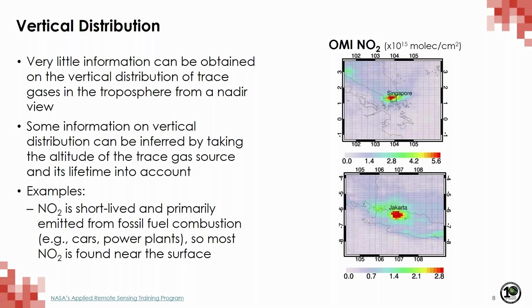Shorter-lived species like NO2 or SO2 are strongly enhanced in the planetary boundary layer, which is the layer closest to the Earth's surface, because of their strong surface sources and short atmospheric lifetimes. You can see very high gradients in NO2 in the plots on the right-hand side. Longer-lived species like ozone and carbon monoxide show weaker vertical variation, making isolation of the amount of these species in the planetary boundary layer very difficult.